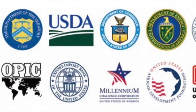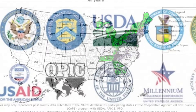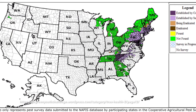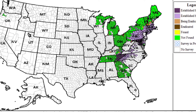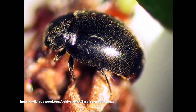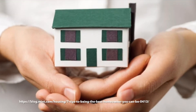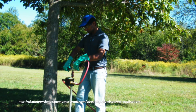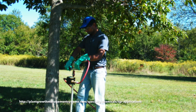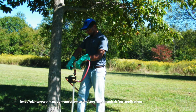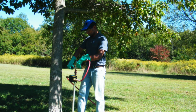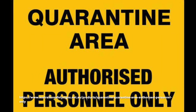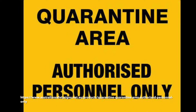Hemlock woolly adelgid is managed at different governmental levels, depending on the state. In states designated as generally infested, government agencies are usually involved with releasing and encouraging biological controls, mainly small beetle predators. In these states, individual property owners that have hemlock trees in their landscapes can choose to treat the trees themselves or to hire professionals to apply treatments. A well-timed application of a systemic insecticide can rid a tree of an infestation for two to three years. In states where the hemlock woolly adelgid is not generally present, quarantine and eradication programs may be in place.